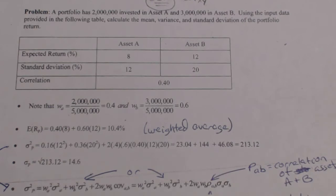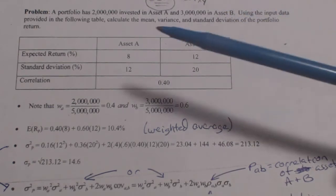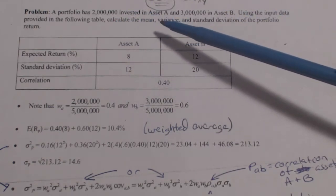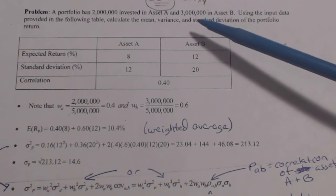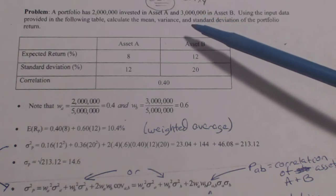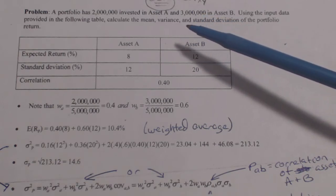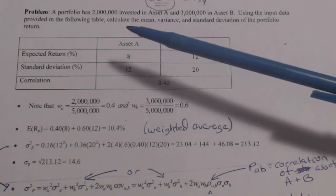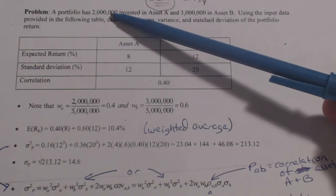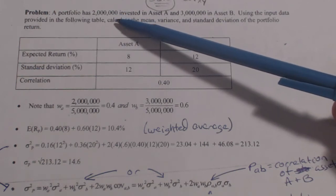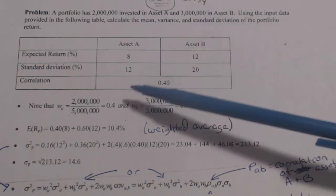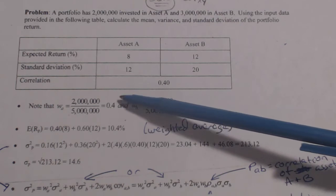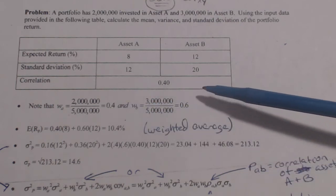Next example: a portfolio has 2 million invested in asset A and 3 million in asset B, for a total portfolio of 5 million. That means the weight is 40% in A and 60% in B.